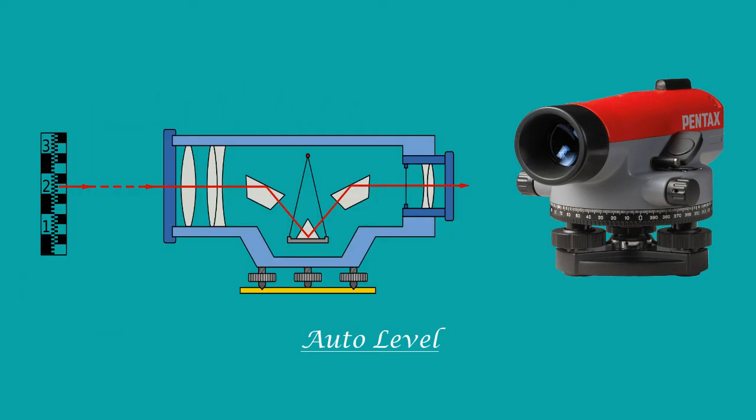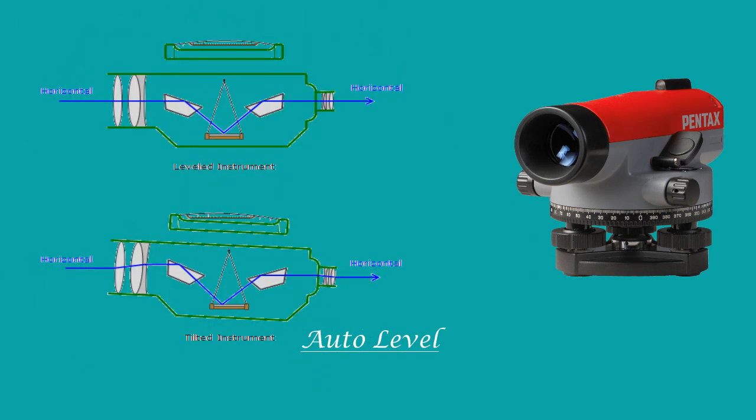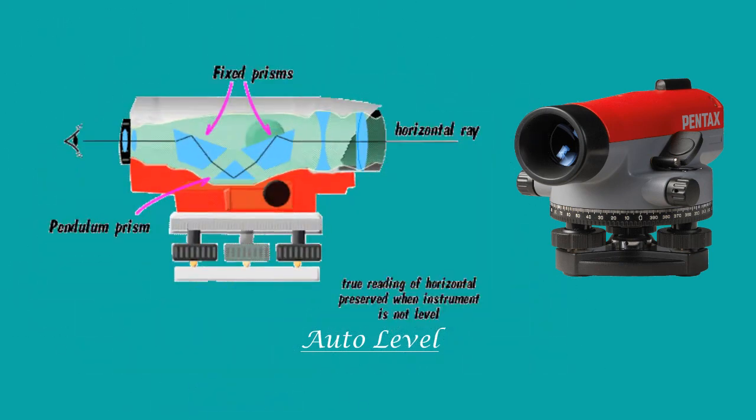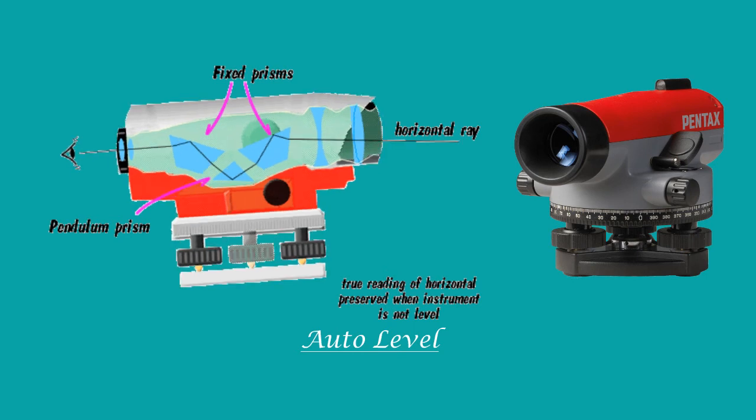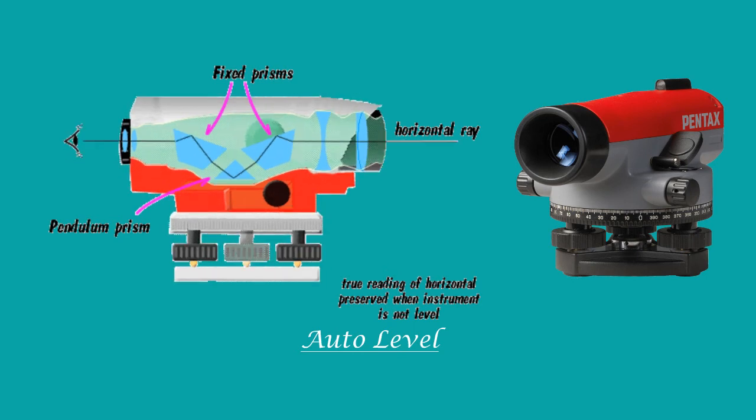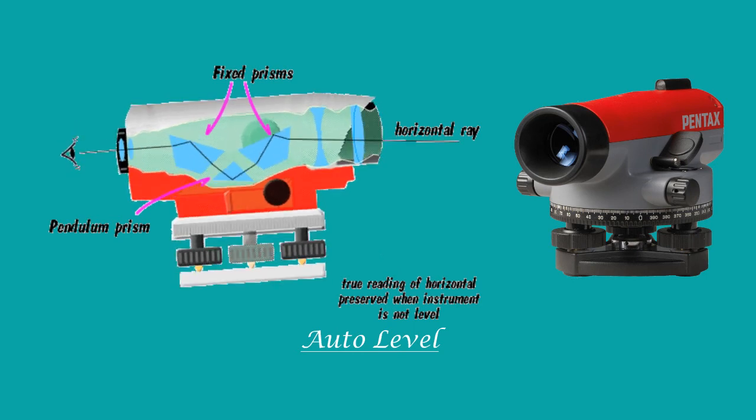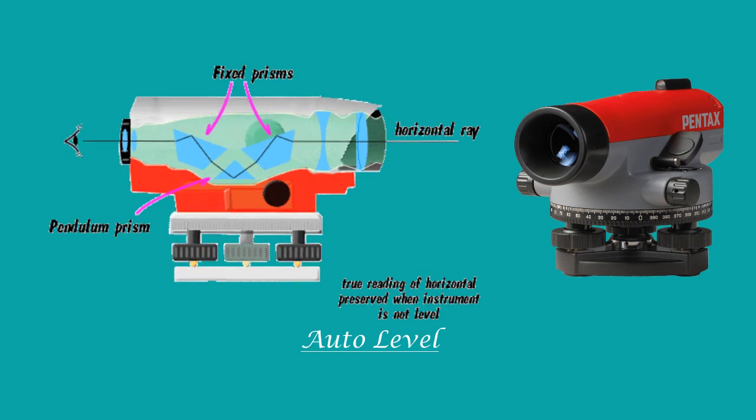In this auto level, inside the telescope there are two fixed prisms and one pendulum prism in between that two fixed prisms. This pendulum prism assures to produce 100% reliable collimation line. Even when the level bubble is slightly out of range and the instrument is inclined, the pendulum prism automatically adjusts the position and gives the collimation line in 100% horizontal. We can understand from the pictures given here.